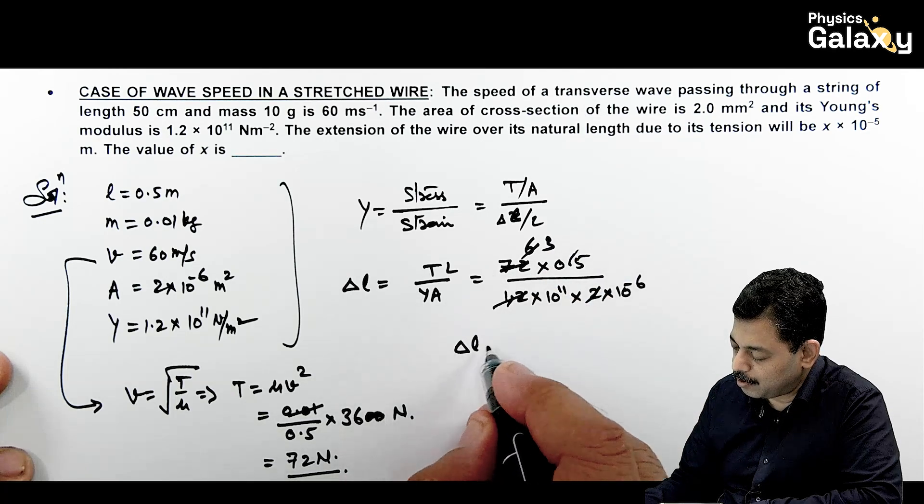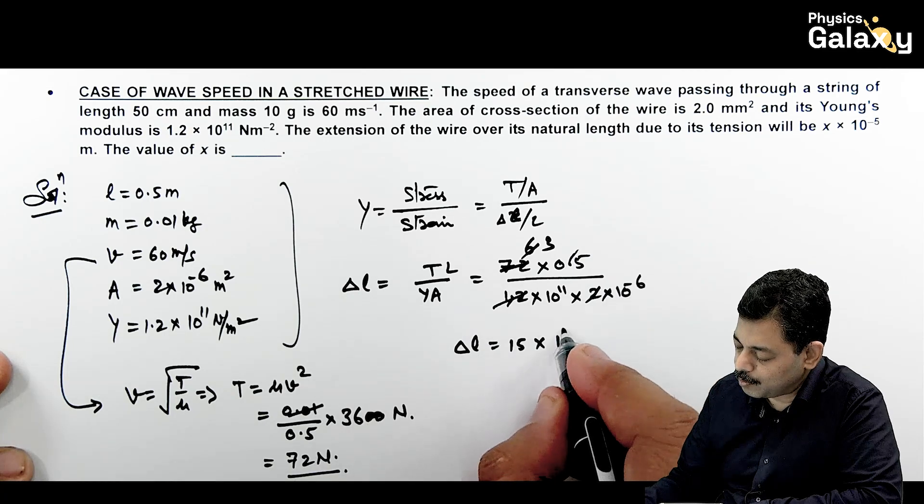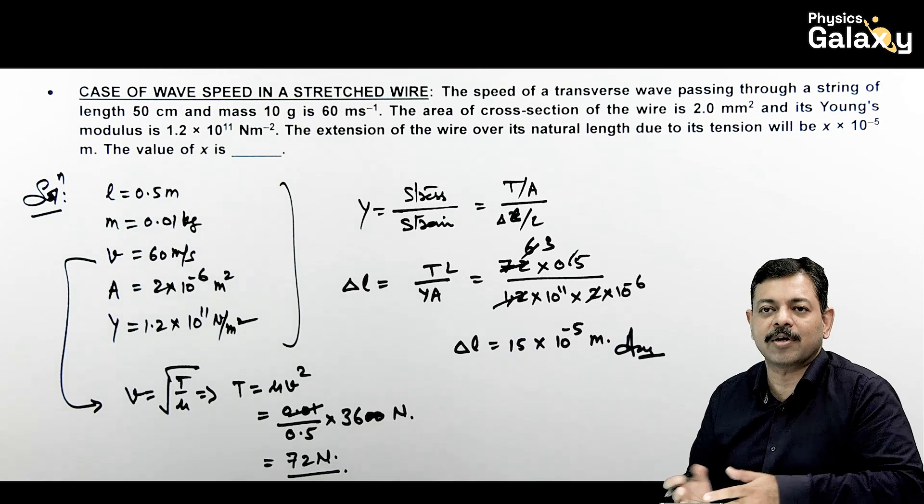If we just analyze it further, decimal cancel ho jayega. 12 se ye 6 aa jayega, 2 se ye 3 aa jayega. So delta l we are getting is 3 into 5 is 15 multiplied by this 10 to power minus 5 meter. That is the result of this problem. Scientific notation mein convert karna chahiye to aap kar sakte hain.